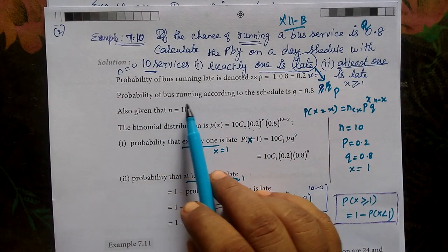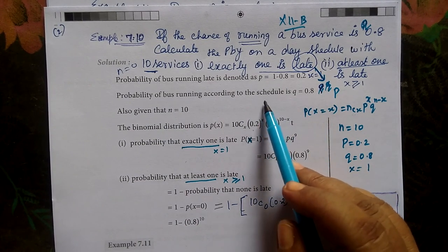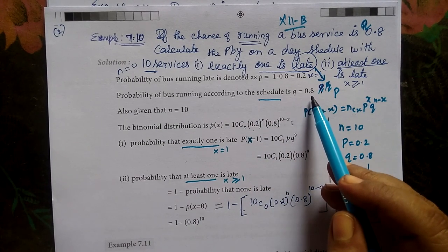Probability of bus running according to the schedule, Q equals 0.8. That is, the schedule is correct.